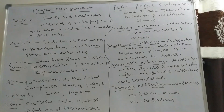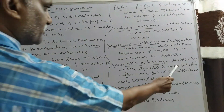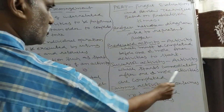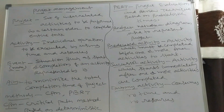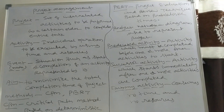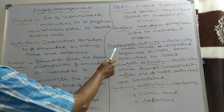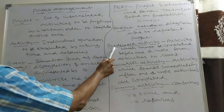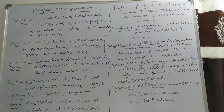What is a successor activity? It is the reverse of a predecessor activity. A successor activity is one which starts immediately after one or more activities are completed. These are two main types of activities: predecessor activity and successor activity.